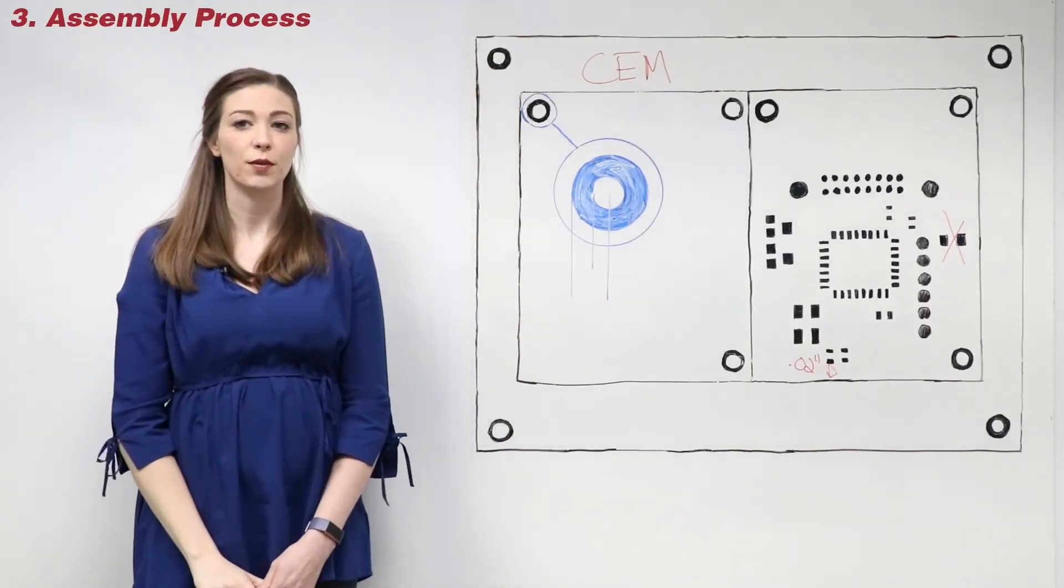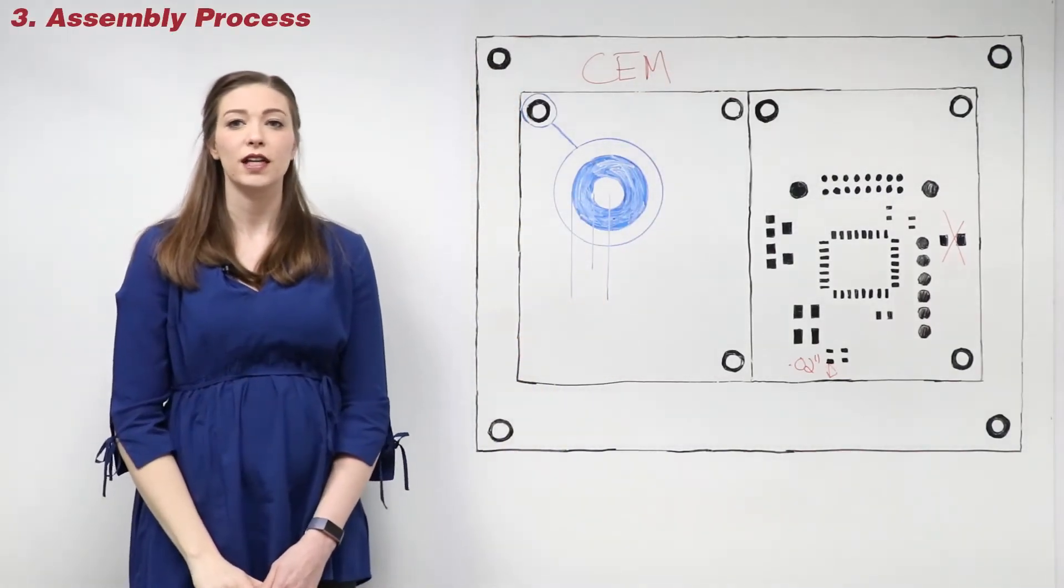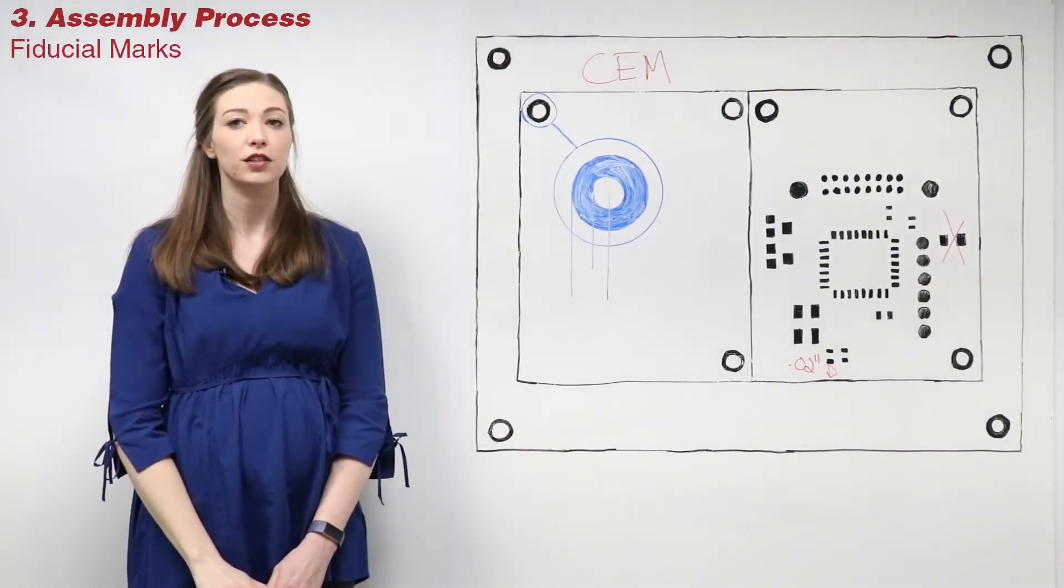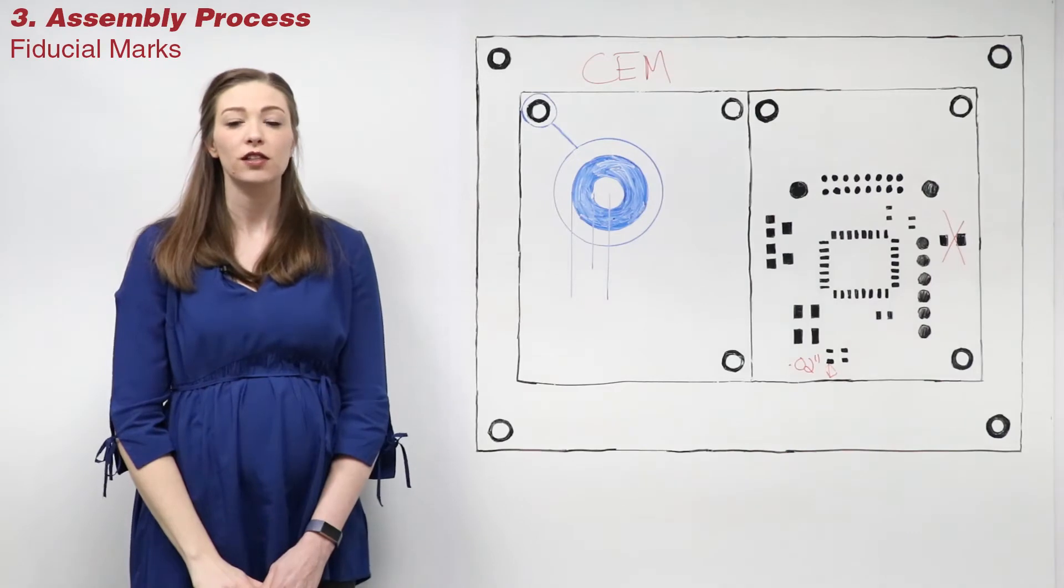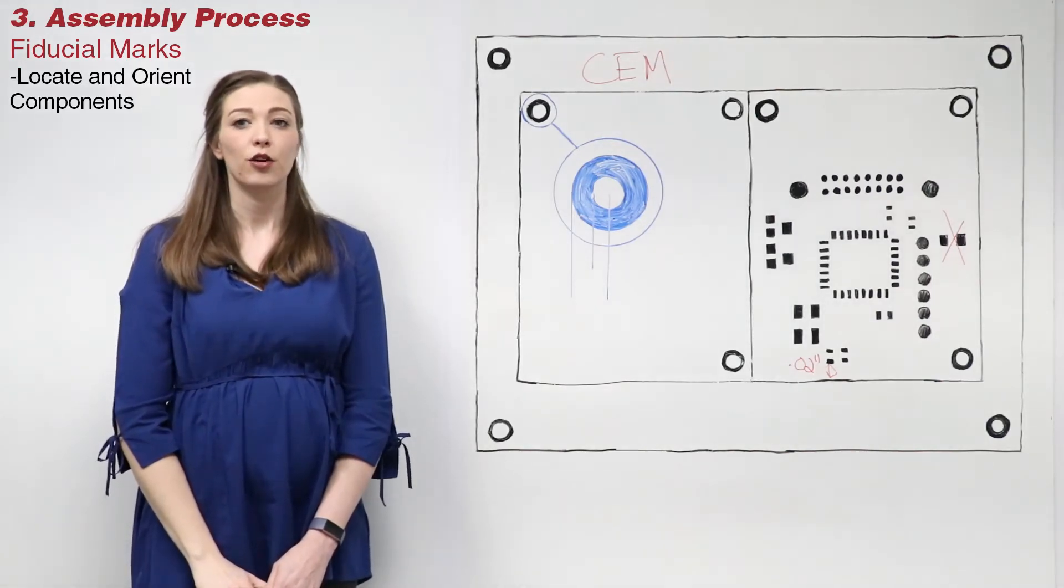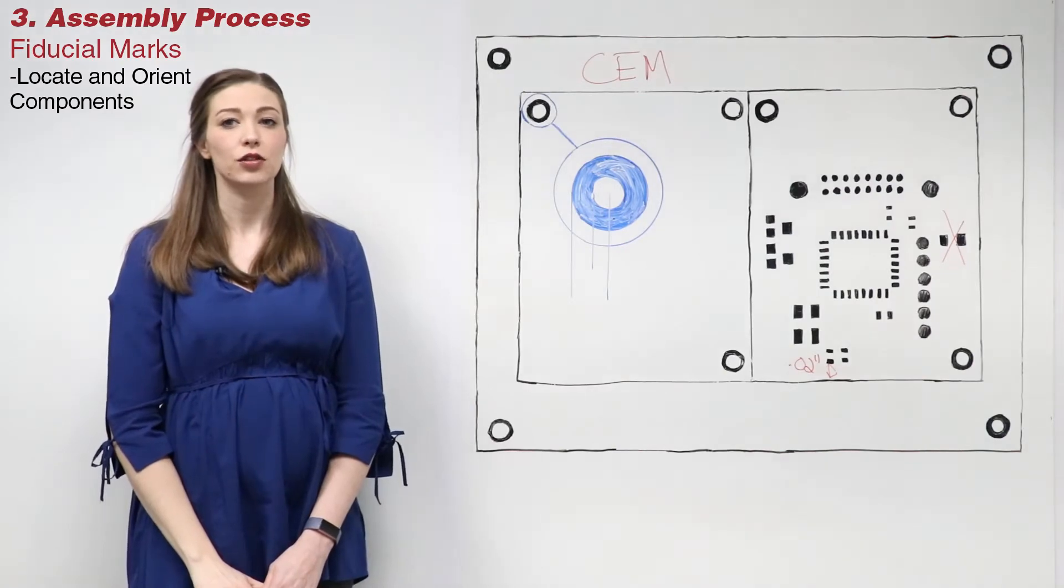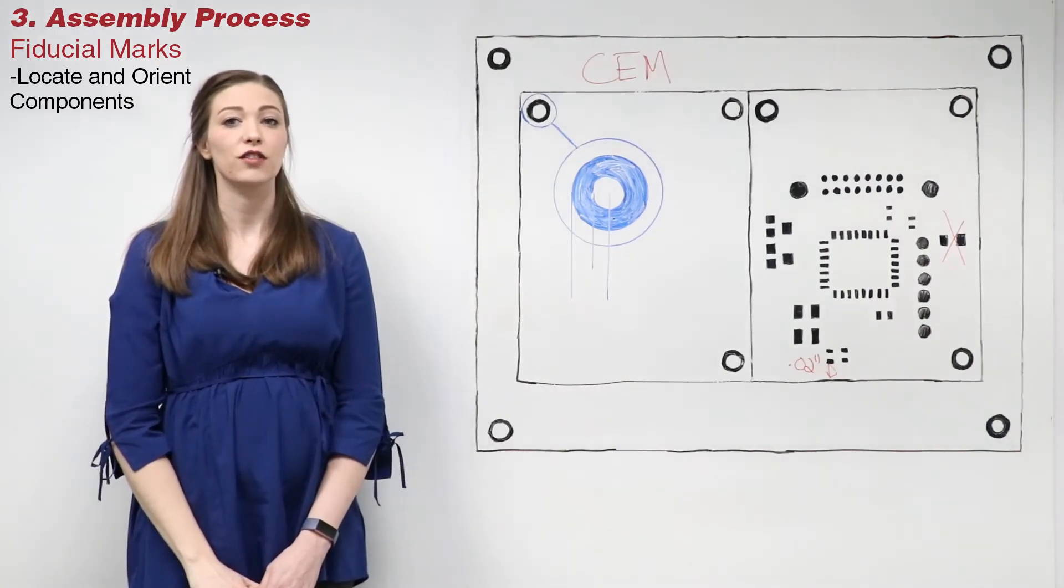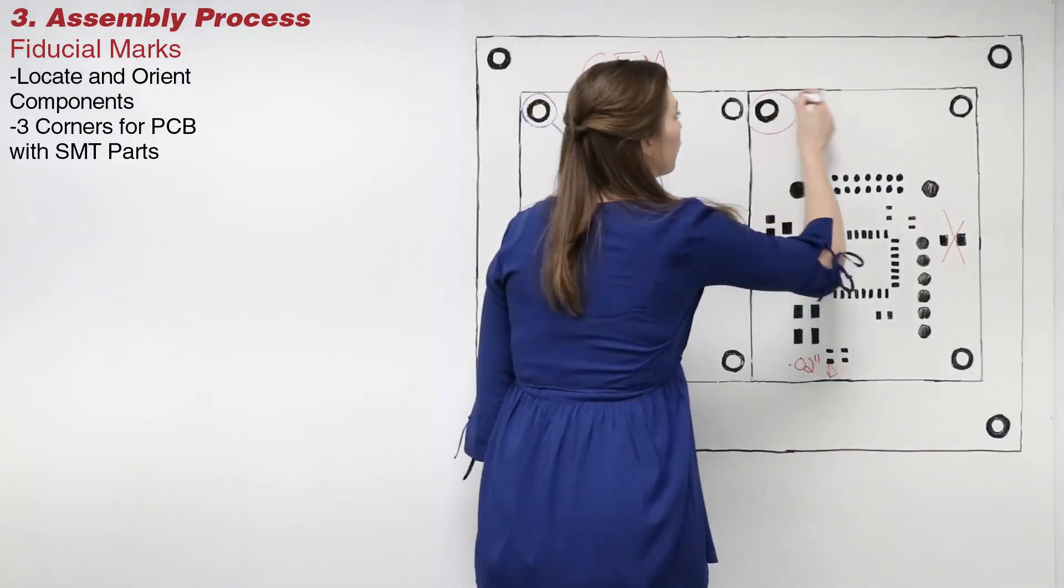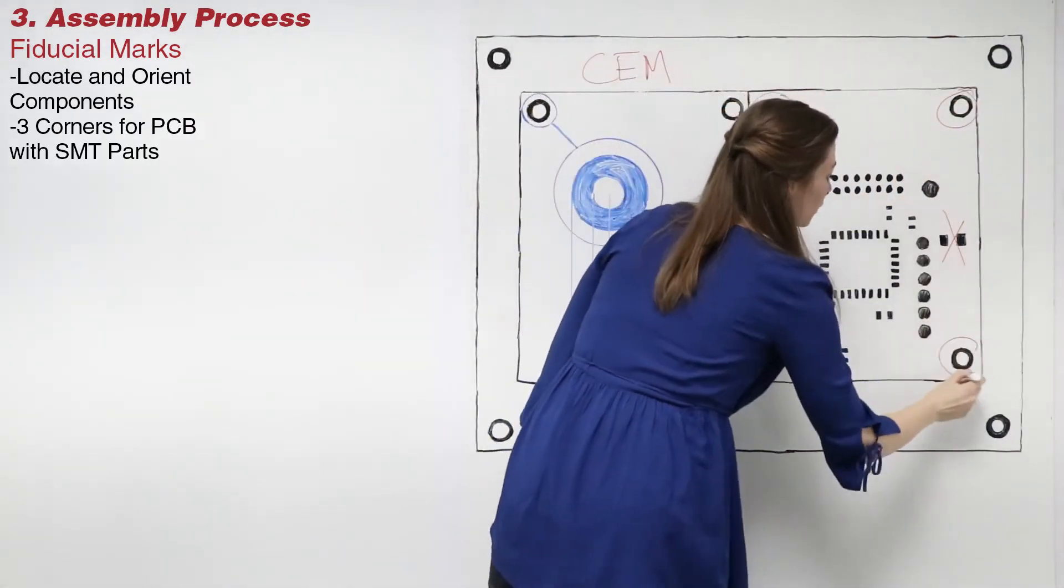Third, consider the assembly process. To create a board that is easily and efficiently assembled, be sure to include fiducial marks in your design. Fiducial marks are used to locate and orient specific parts on the PCB. They will be used in the assembly process to ensure the correct placement and orientation of components. Remember to place fiducials in at least three corners of the board for PCBs with surface mount components.